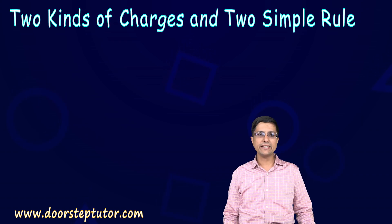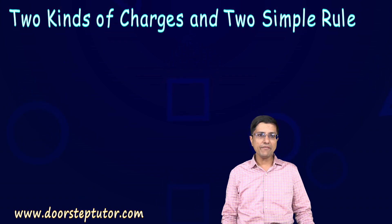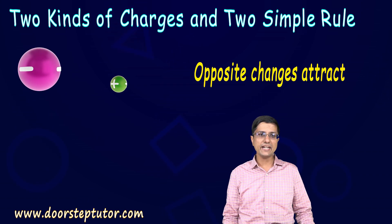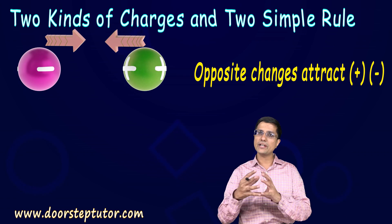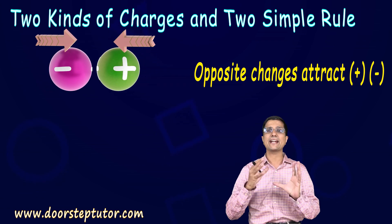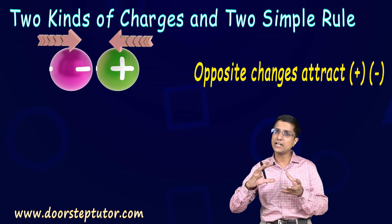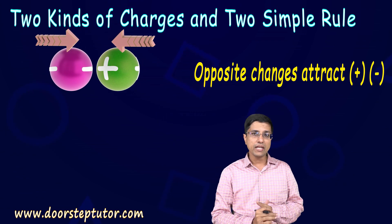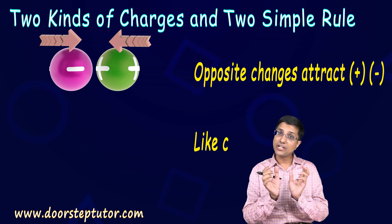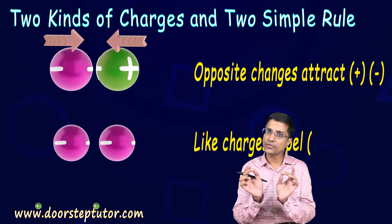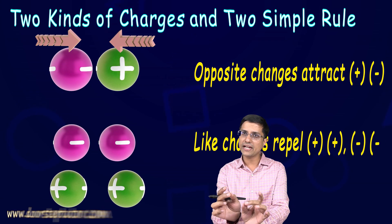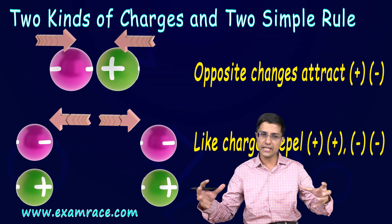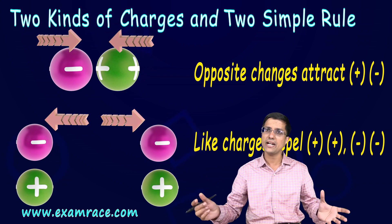Whenever I bring a positive and a negative charge together, they attract — there is always an attraction between them. If I bring like charges together, positive-positive or negative-negative, they will always repel. They'll try to get away.